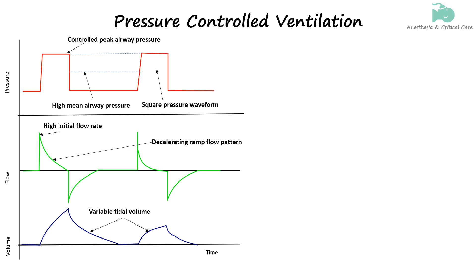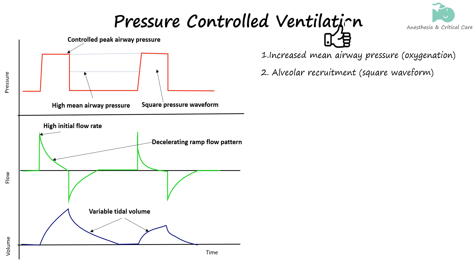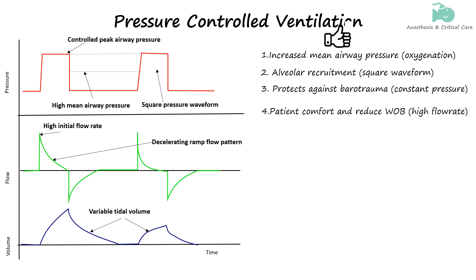Pressure-controlled ventilation offers several potential benefits for patients with severe hypoxia and poor lung compliance. One key advantage is improved oxygenation, as it increases mean airway pressure. Additionally, it enhances alveolar recruitment by utilizing a square pressure waveform, which opens alveoli earlier and keeps them open longer, leading to better gas exchange. Another benefit is protection against barotrauma, as pressure is kept under check. Moreover, pressure control enhances patient comfort and reduces the work of breathing. It provides a high initial flow rate, which prevents flow starvation — a condition where the patient's need for air isn't met by the ventilator. Finally, pressure-controlled ventilation effectively manages circuit leaks, as it can automatically adjust the inspiratory flow to maintain the set pressure even in the presence of significant leaks in the ventilator circuit.